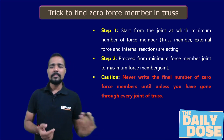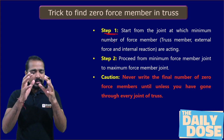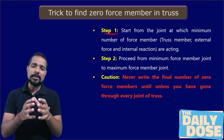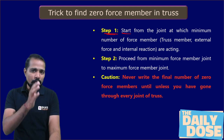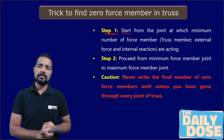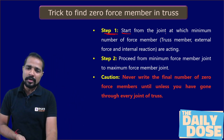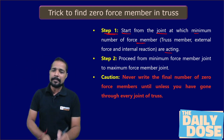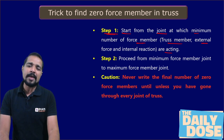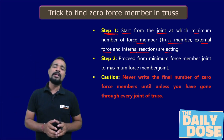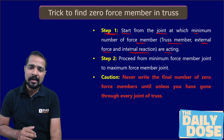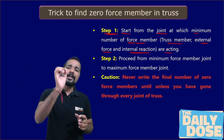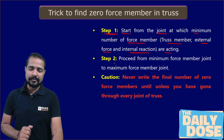Step by step, let's move forward. The first step: when the entire truss is given to us, you need to find the zero force members in the truss. You have to start moving from one joint to another joint. Start from a joint at which the minimum number of force members are acting. 'Force member' here means truss members, external forces applied, and reactions provided by the supports — all combined.